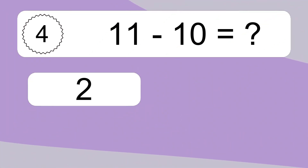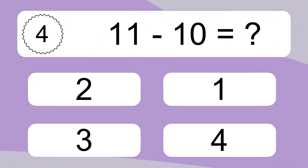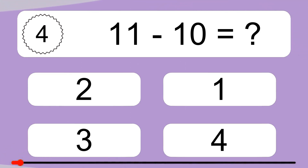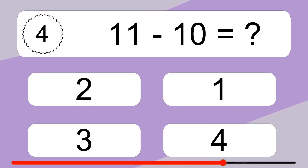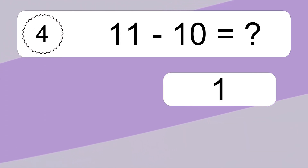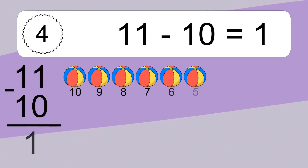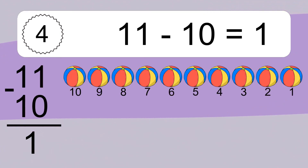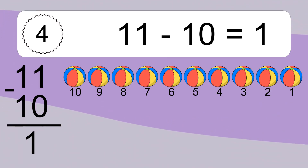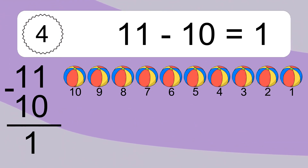11 minus 10 equals what? 11 minus 10 equals 1. Let's count it: 10, 9, 8, 7, 6, 5, 4, 3, 2, 1.